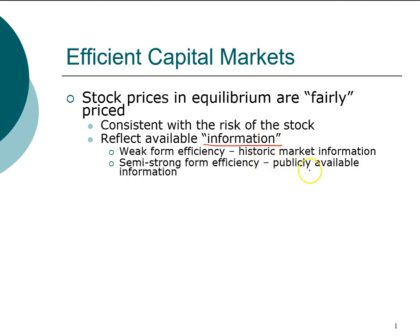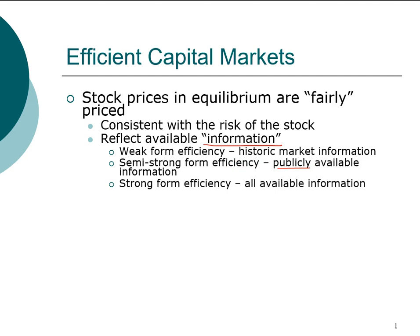The next set of information is larger — in addition to historic information, we take into account publicly available information. Public here does not necessarily mean free; it may include information you can obtain legally but may have to pay for, such as analyst reports. Publicly available information includes financial disclosures, financial statements, annual reports filed with the SEC, press releases, news articles, and analyst research reports. If the stock price reflects all this, the market is considered semi-strong form efficient.